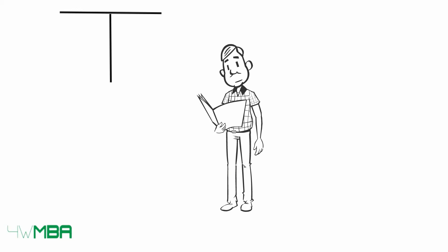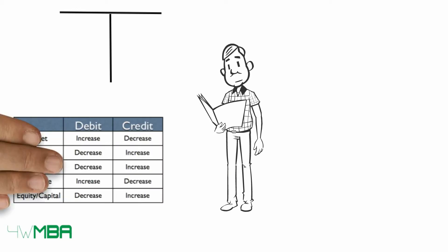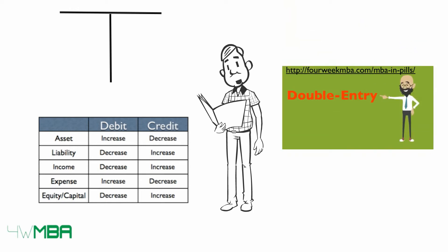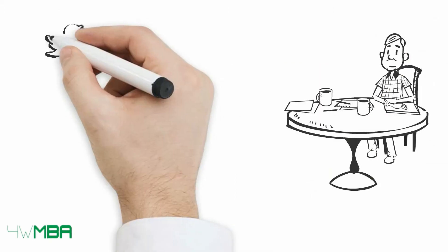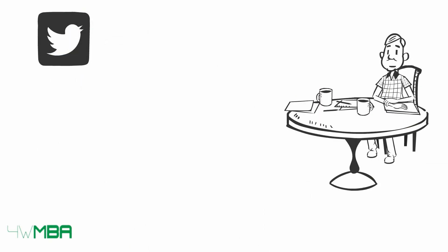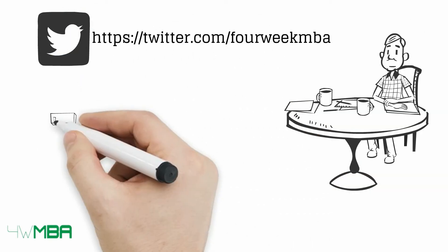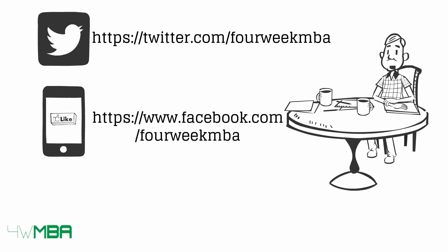To sum up: when recording journal entries, use the T-account as a visual aid, then use the table of accounts to get oriented. Watch the double-entry video if you still have doubts. If you liked this video and found the topic interesting, please leave a comment at the links below.